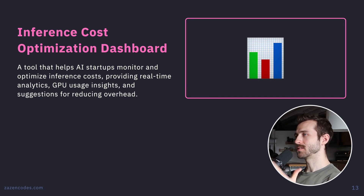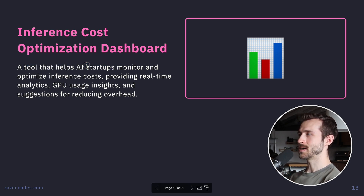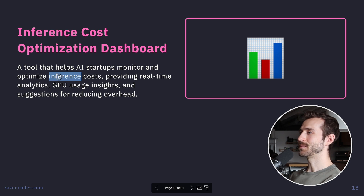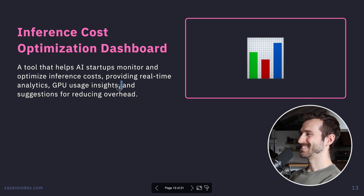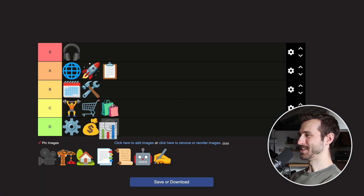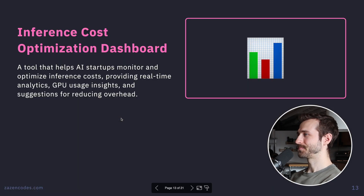Inference Cost Optimization Dashboard — a tool that helps AI startups monitor and optimize inference costs. I just don't see it. That is D tier.